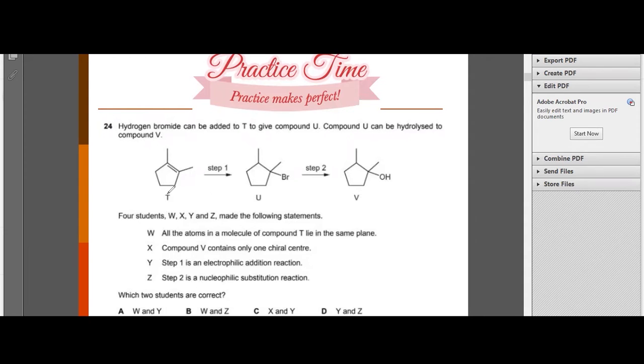You know that the functional group of T is alkene, this is alkene, this is halogenoalkane, and this is alcohol. Four students make the following statements. W: all the atoms in molecule of compound T lie in the same plane. This is wrong since you know that we have sp2 carbons here and sp3 carbons here. They absolutely lie on different planes. So this is wrong. X: compound V contains only one chiral center. Let's see. This is chiral, this is chiral. So there are two chiral centers, so this is wrong.